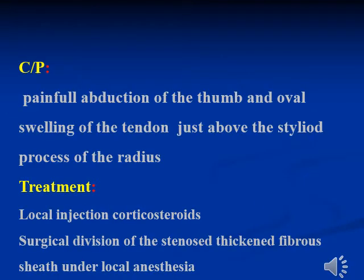The clinical picture includes painful abduction of the thumb and an oval swelling of the tendon just above the styloid process of the radius. Treatment options include local injection of corticosteroids or surgical division of the stenosed fibrous sheaths under local anesthesia.